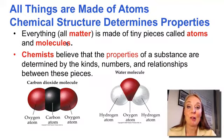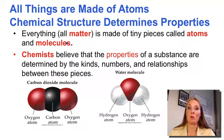Chemists believe that the properties of the substances, in other words, whether the substance is a solid liquid or a gas, how high is the boiling point, what does it taste like, what does it smell like, all of those things are determined by the kinds, numbers, and relationships between the atoms and molecules of that substance.